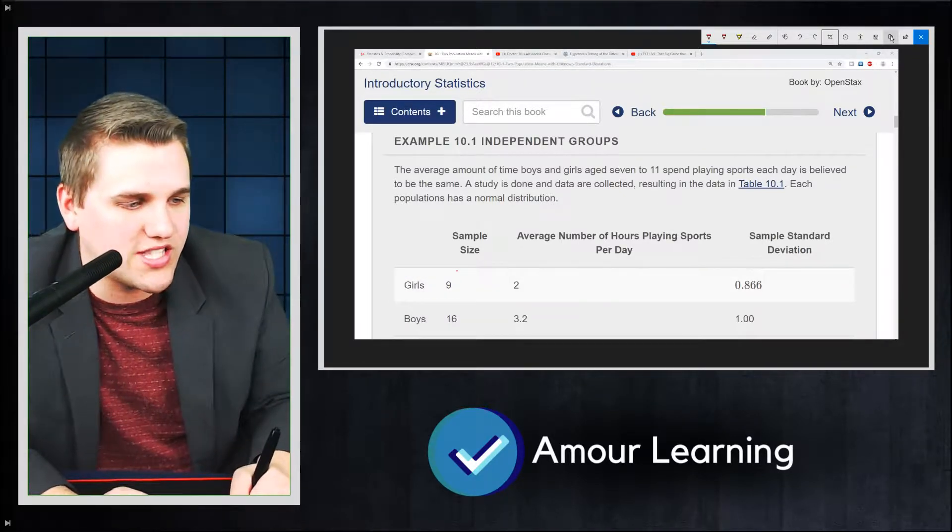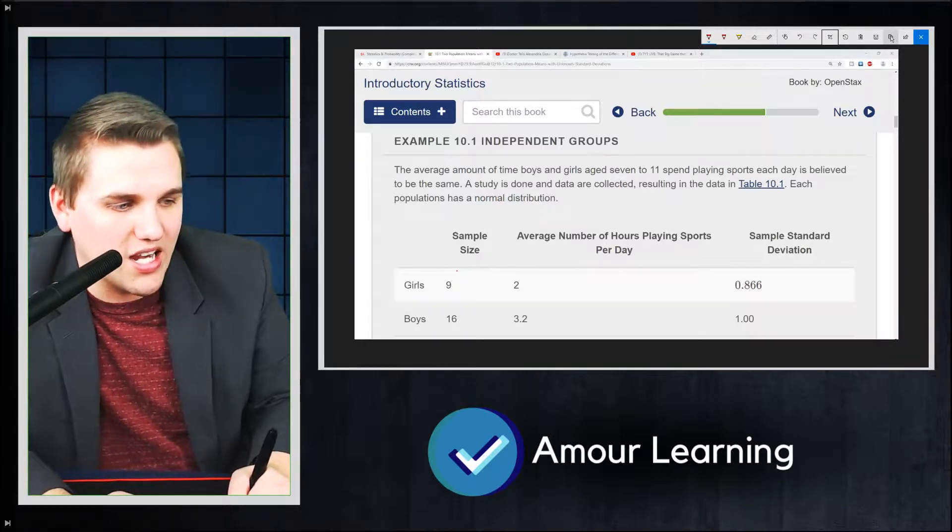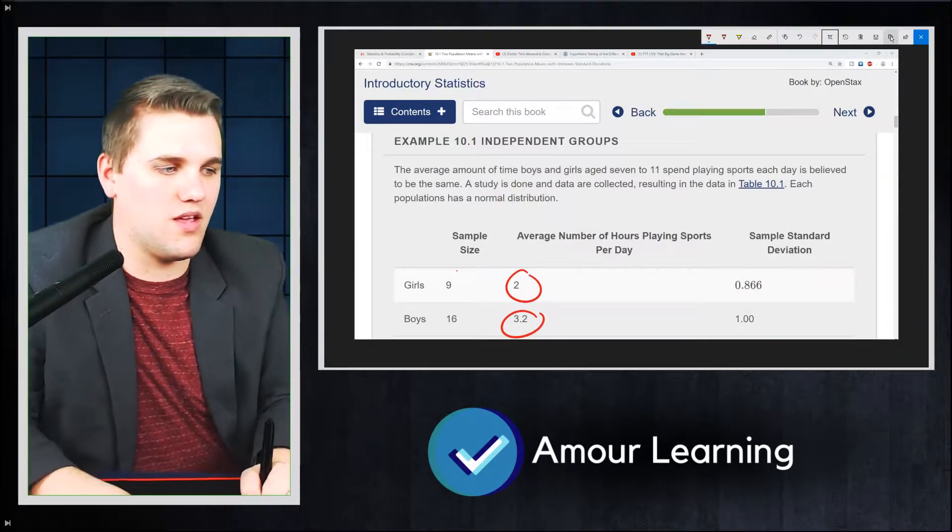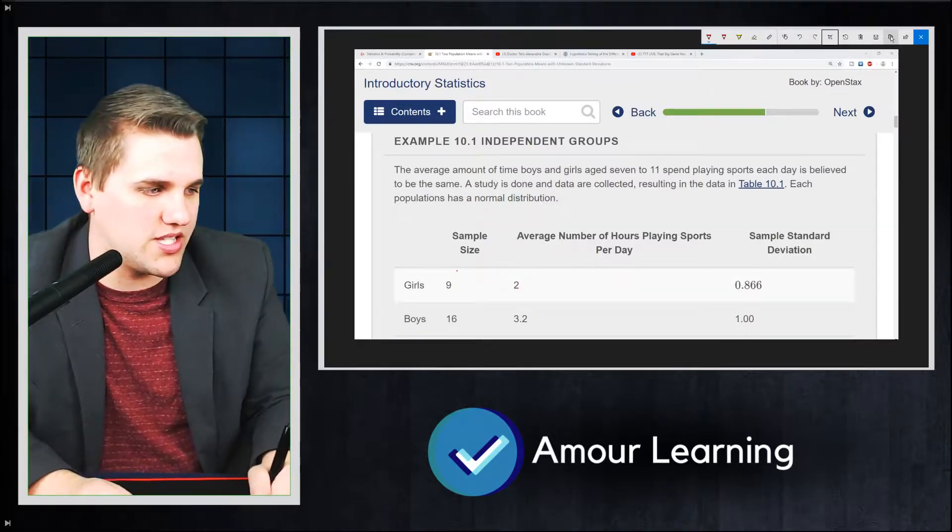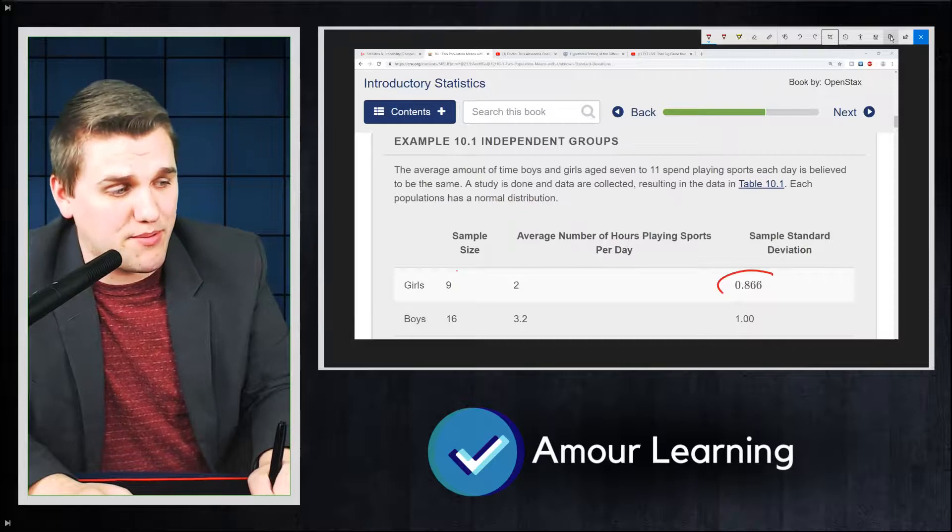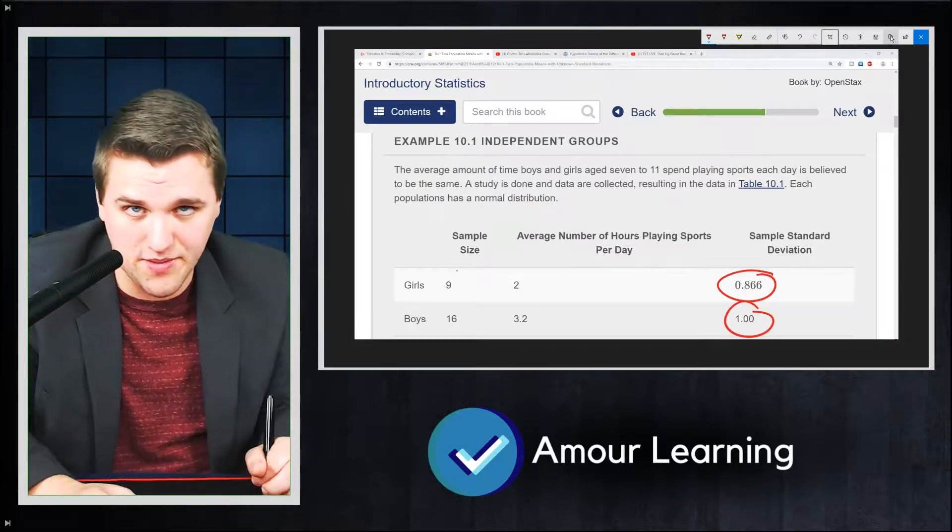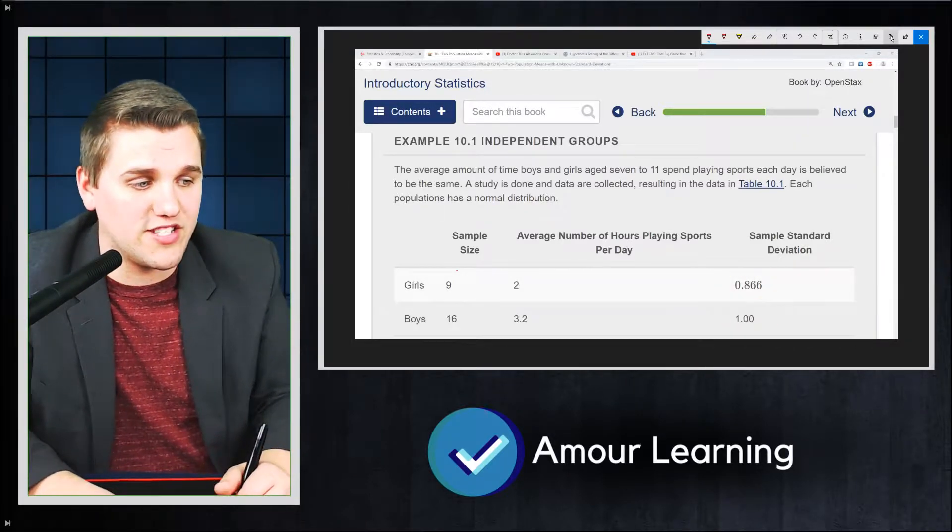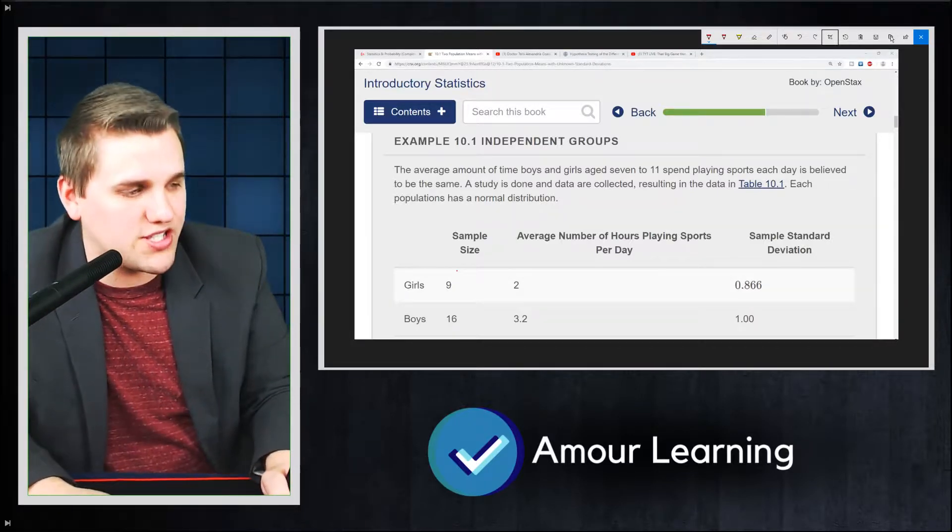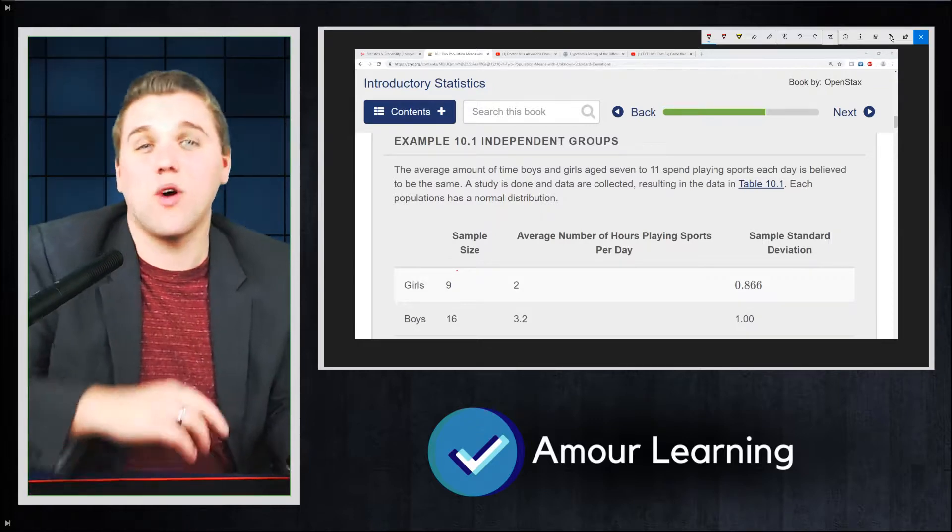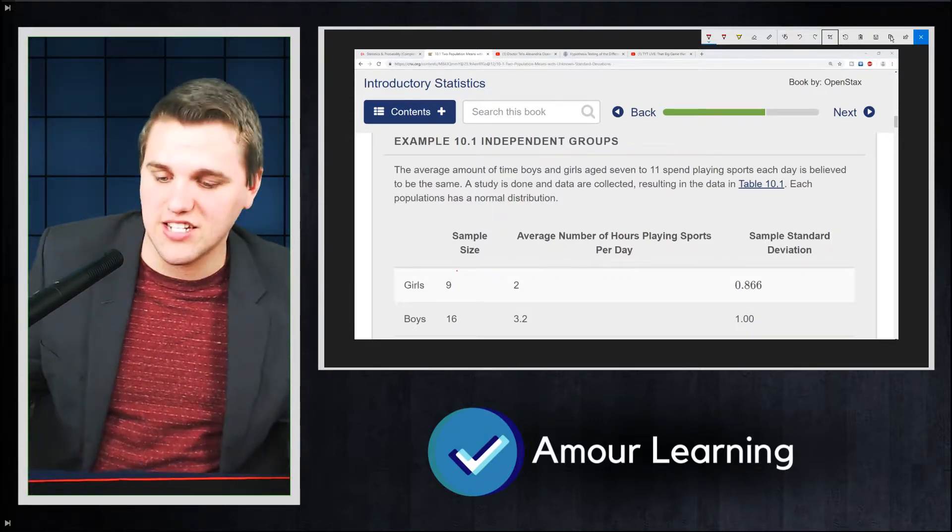In this case you notice that the girls played less sports than the boys. At least the average number of hours played was less than the boys here. But keep in mind that the sample standard deviations are also different. So you have different sample sizes, you have different number of hours played, different averages, and different standard deviations. That's going to make a significant difference.